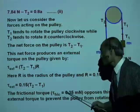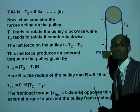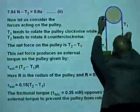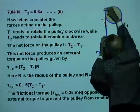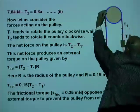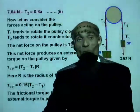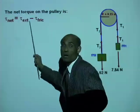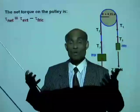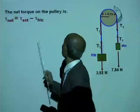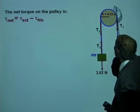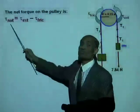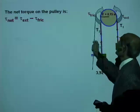The frictional torque τ_f = 0.35 N·m opposes the external torque. The net torque τ_net = τ_ext − τ_f = 0.15(T₂−T₁) − 0.35. Setting τ_net = Iα gives the third equation relating T₁, T₂, and a.